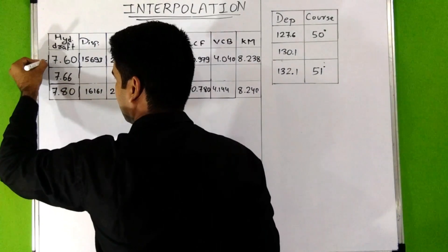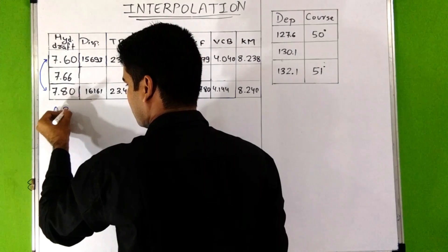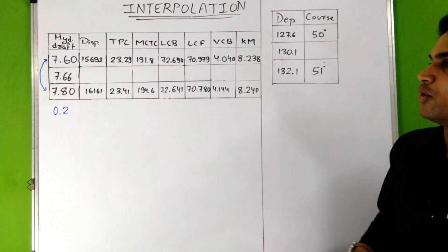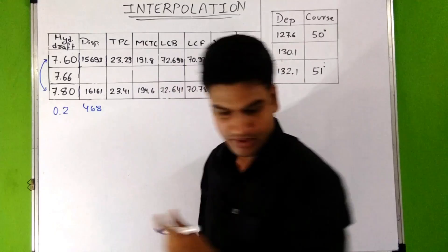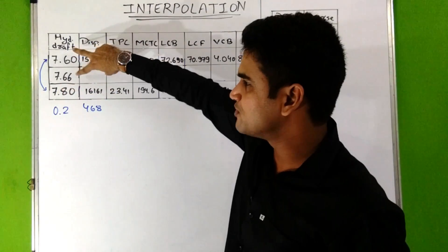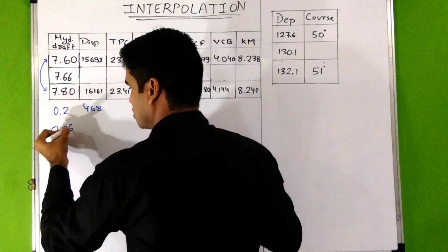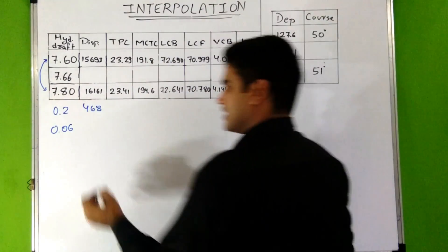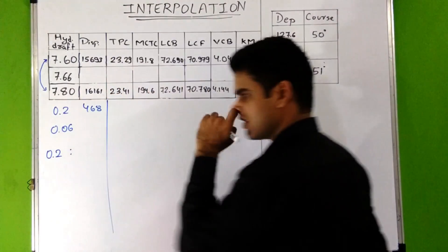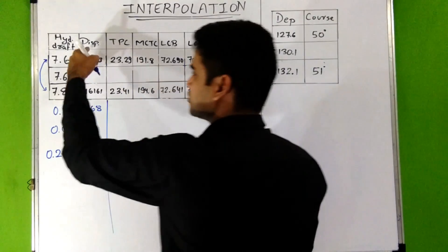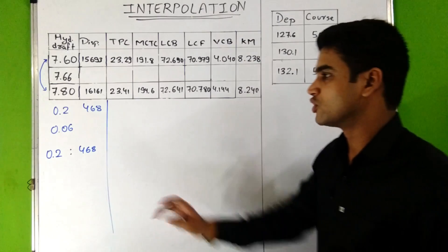First, find the difference between the two known draft values. The difference is 0.2. The difference in displacement between those two drafts is 468. Next, find the difference between the unknown draft value and the previous known value: 7.66 minus 7.6 gives a difference of 0.06. So at a draft difference of 0.2, the displacement increases by 468.